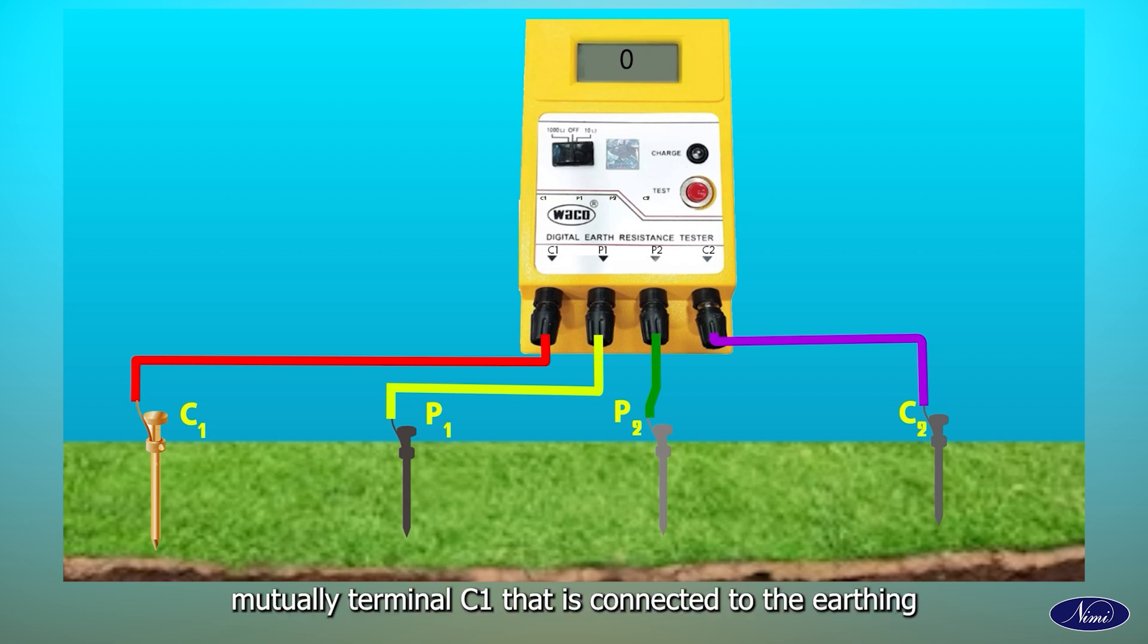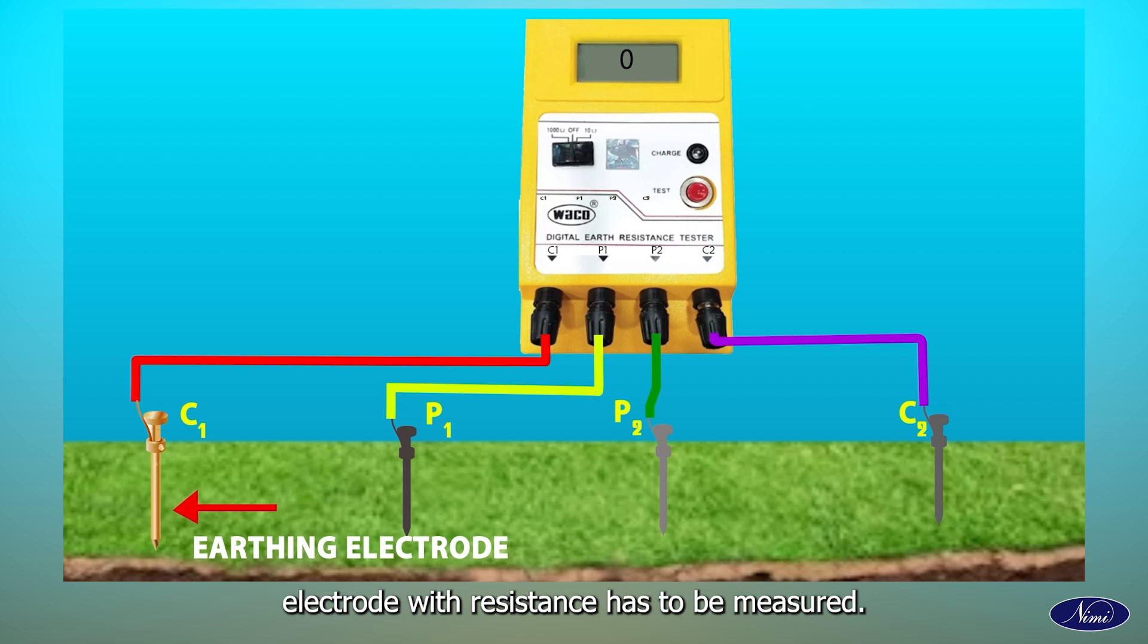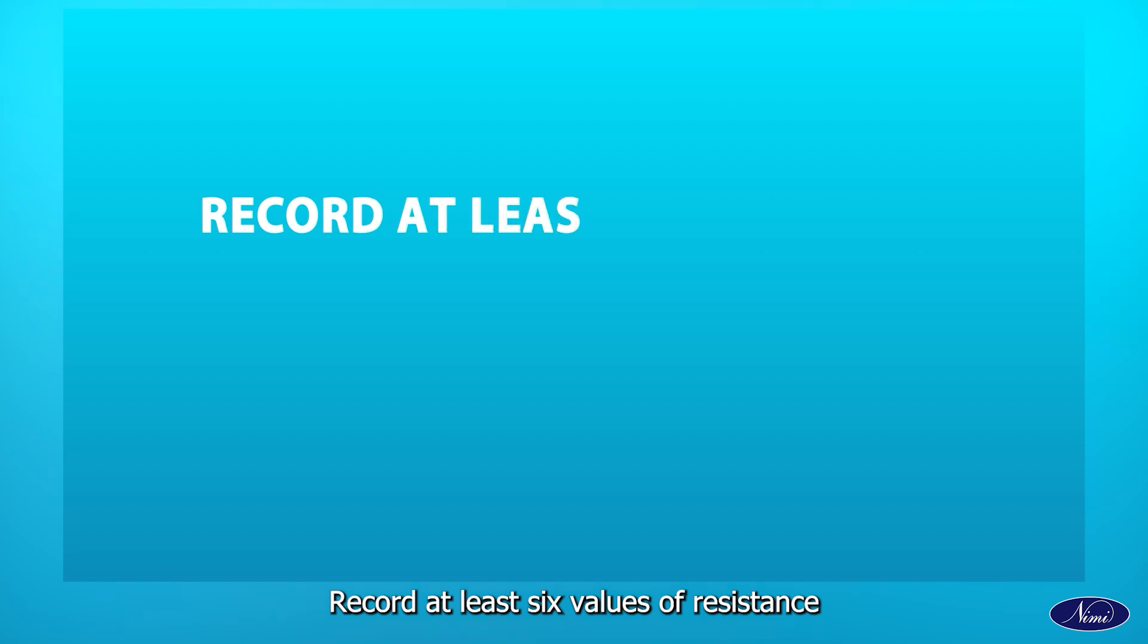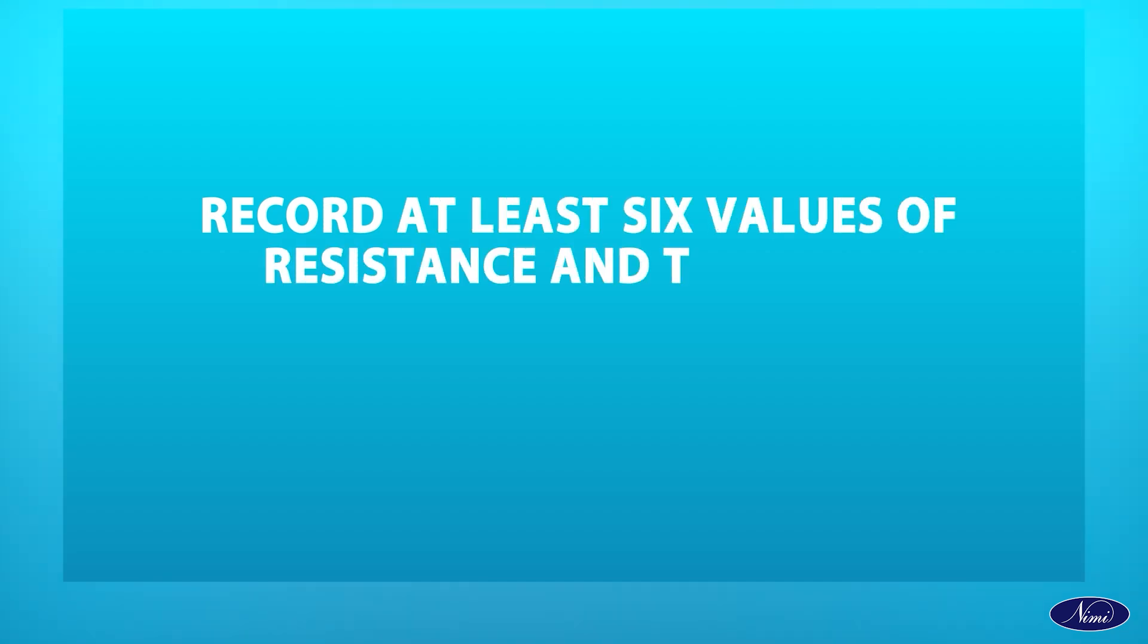Usually, terminal C1 is connected to the earthing electrode whose resistance has to be measured. Press START on the Earth-resistant tester to test the resistance. Record at least six values of resistance and take the average as the exact value of the resistance measured.